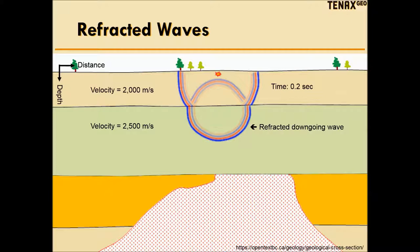When the seismic energy enters the higher-velocity rock, the part of the wave in the fast rock travels further in 0.1 seconds than the part of the wave still inside the slow rock.